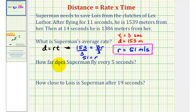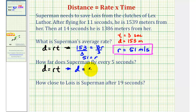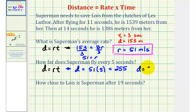Next, we want to know how far does Superman fly every five seconds. Again, we use our distance equals rate times time formula. We want to solve for D, where the rate is 51 meters per second and the time is five seconds. 51 times five is equal to 255. Therefore, every five seconds, Superman travels 255 meters.